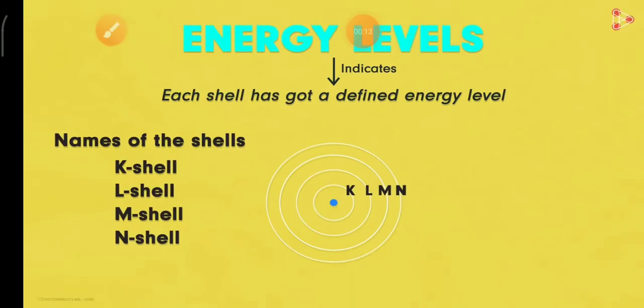So K means your nearest nucleus. Nucleus is very close to the shell. K shell, then L, then M, then N. So nucleus is very close to the very nearest nucleus. This is K shell, then L shell, then M, then N shell.